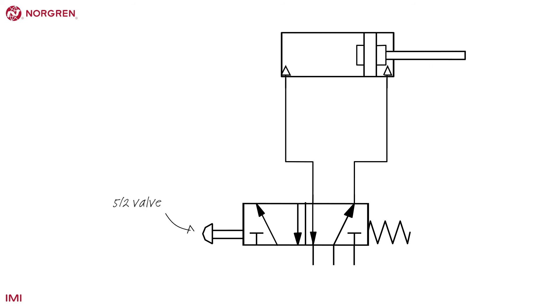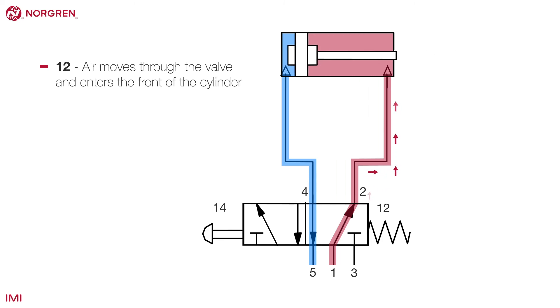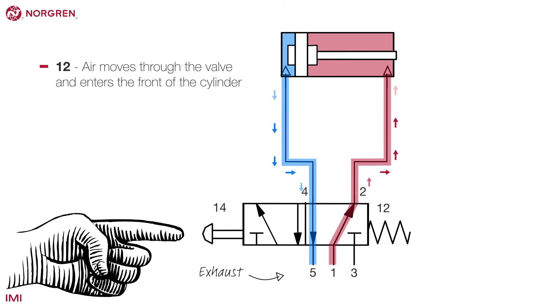Here is a diagram demonstrating a 5-2 valve operating a double-acting cylinder. In the 1-2 position, air moves through the valve and enters the front of the cylinder, pushing it inwards. Air from the back of the cylinder enters port 4 of the valve and is vented through port 5 of the valve, the exhaust.